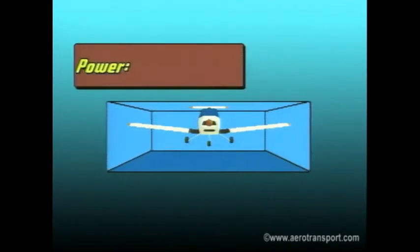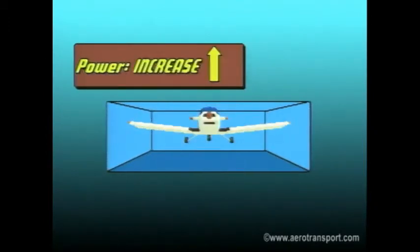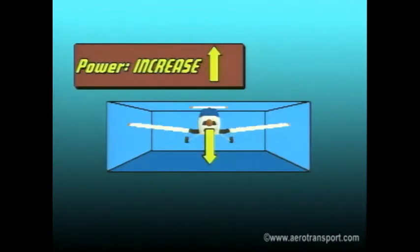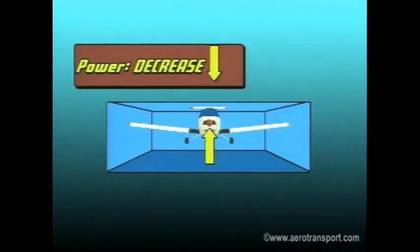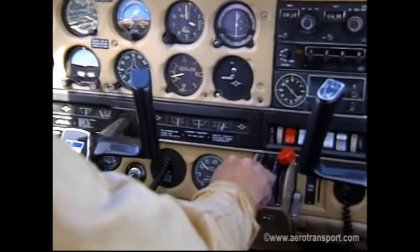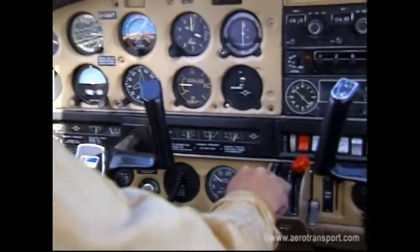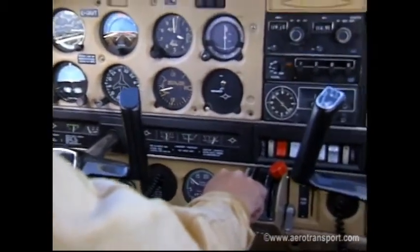While in straight and level flight, if the power is increased the nose will pitch up. Conversely, a decrease in power causes the nose to pitch down. Therefore, to stay level you must lower the nose when you increase the power and raise it if you decrease the power. It is important to realize early in your flight training the interdependence of the cockpit controls.